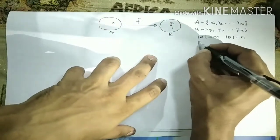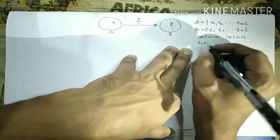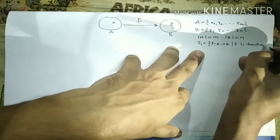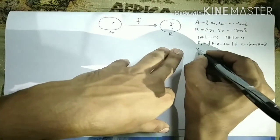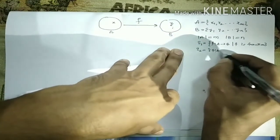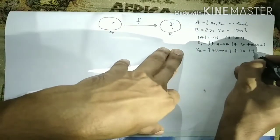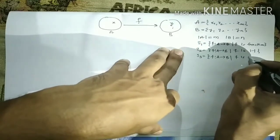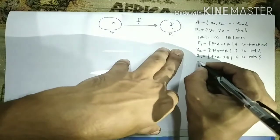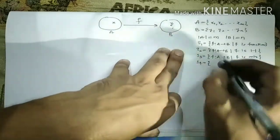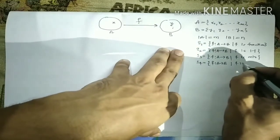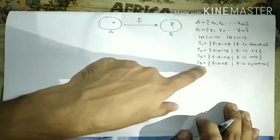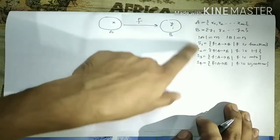Let me define some sets. S1 consists of all functions from A to B. S2 consists of all functions from A to B where f is 1-1. S3 consists of all functions from A to B where f is onto. S4 consists of all functions from A to B where f is bijective. Our aim is to find the cardinality of all four sets.